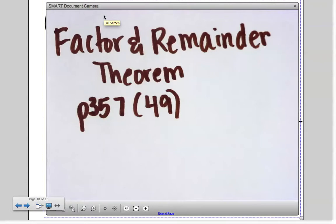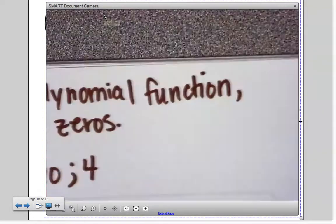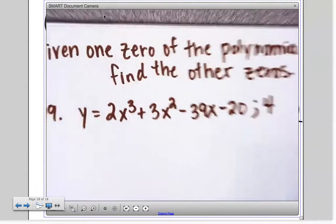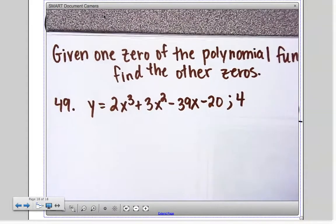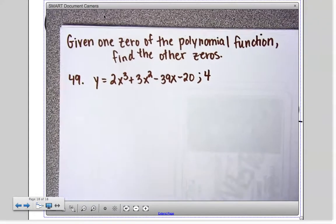Okay, I'm going to do another problem with the factor and remainder theorem. I'm going to do page 357, number 49. Those directions say given one zero of the polynomial function, find the other zeros.